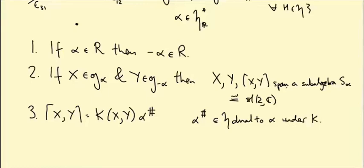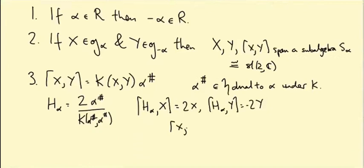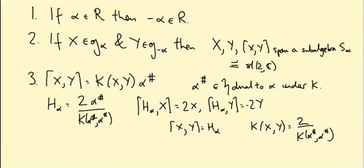While proving the subalgebra property, we used a slight rescaling of alpha sharp and defined h_alpha to be 2 alpha sharp over k(alpha sharp, alpha sharp). This was the element satisfying the nice bracket relations: h bracket x equals 2x, and h bracket y equals minus 2y, assuming x bracket y equals h, under the assumption that k(x,y) equals 2 over k(alpha sharp, alpha sharp), so we could just rescale y accordingly.